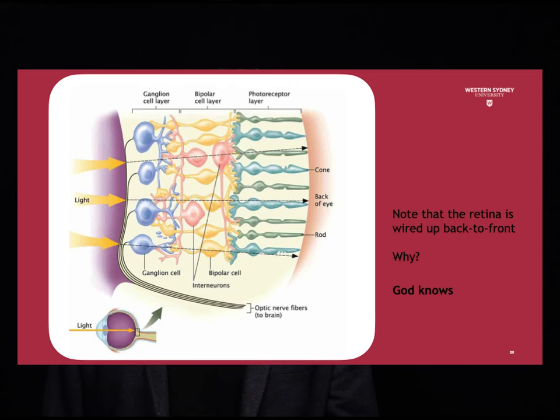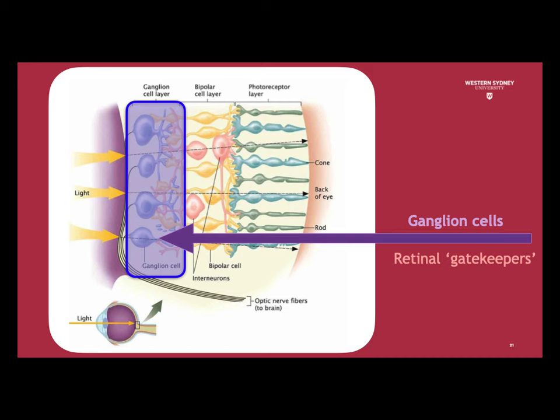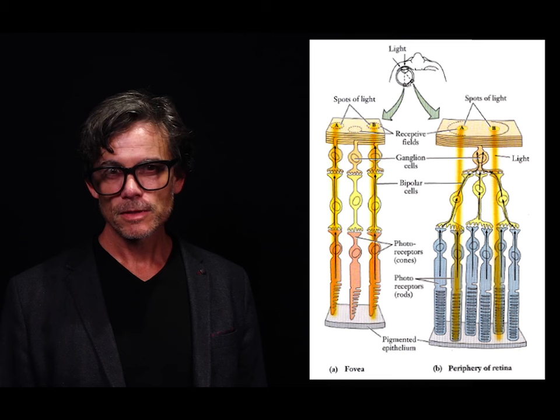Once a photoreceptor absorbs a sufficient number of photons, it becomes stimulated and increases its electrical firing rate. These neural signals then propagate to the post-receptoral neurons — that is, the horizontal, the bipolar, the amacrine, and the ganglion cells. The ganglion cells represent the final stage of retinal processing. If ganglion cells don't respond, the response to a given image will not actually make it out of the eye. In this sense, we can think of the ganglion cells as retinal gatekeepers.